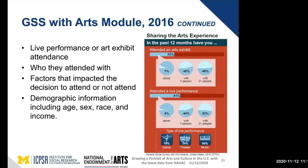Here's an example of what you might find in the arts module. The GSS asked respondents questions about their attendance as well as characteristics of events — what type was it, who did they attend with. This infographic is particularly about people's attendance at arts exhibits and live performances. Perhaps unsurprisingly, most of those performances were music, which makes sense given the range of music performances compared to dance and theater.